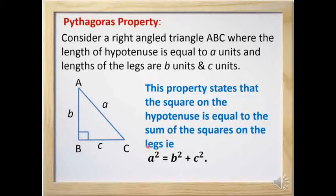Suppose we have a right angle triangle ABC which is right angled at B. If we take the measure of side AC as 'a' units, the measure of side AB as 'b' units, and the measure of side BC as 'c' units, then according to this property: a² = b² + c².